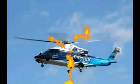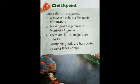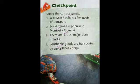Now let's do the checkpoint in our textbook. Circle the correct words. First: a dash is a fast mode of transport — aeroplane. Second: local trains are popular in — Mumbai. Third: there are dash major ports in India — 13 major ports and nearly 200 minor ports. Fourth: perishable goods are transported by — aeroplanes, since it is the fastest mode of transport.